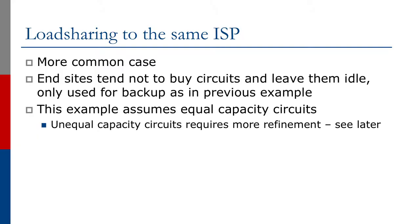We're now going to look at two links to the same ISP but with load sharing. It's a little bit unusual to buy a circuit or connection and leave it idle, as we saw in the previous example. Usually we use the main link and are happy with it until the day it breaks, then discover that the backup doesn't actually work, even though BGP may be working. So end sites tend to buy two equal capacity circuits and balance traffic over those two links — much more common.